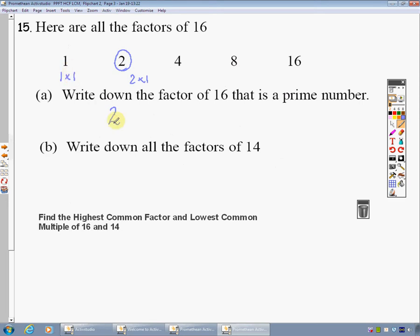Write down all the factors of 14. Well, I know 14 can be 1 times 14 and 2 times 7. There's no other ways I can split that up. So I'm going to write 1, 2, 7 and 14. OK. I now need to find the highest common factor and lowest common multiple. HCF and LCM.